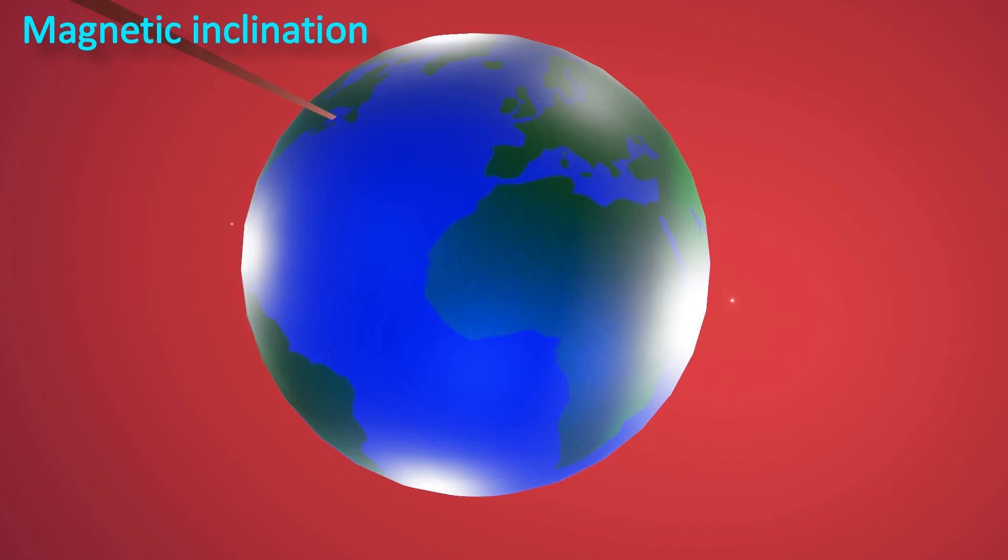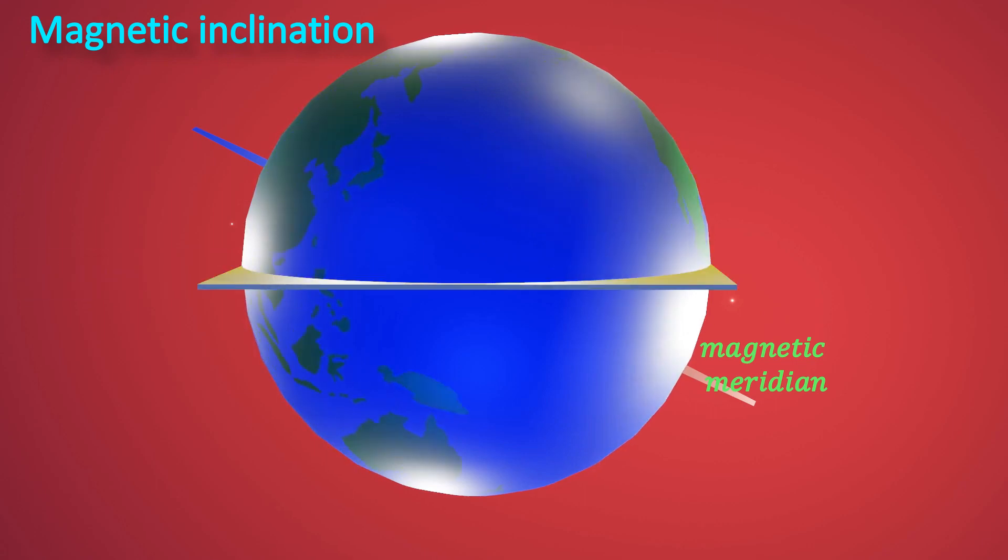Now we see what is magnetic inclination. This is the magnetic meridian. This is the magnetic field along the horizontal direction. It is indicated by the BH vector.